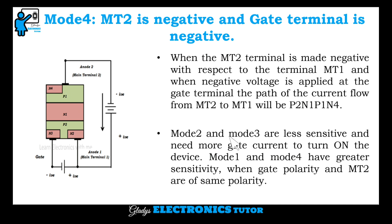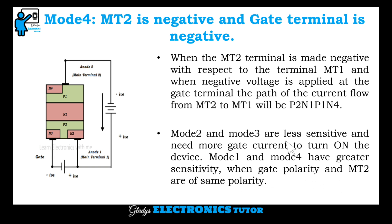Mode 2 and mode 3 are less sensitive and need more gate current to turn on the device. Mode 1 and mode 4 have greater sensitivity when gate polarity and MT2 are of the same polarity.